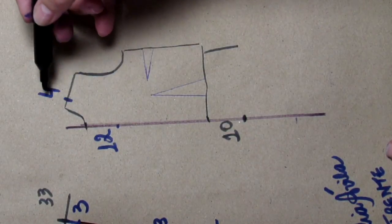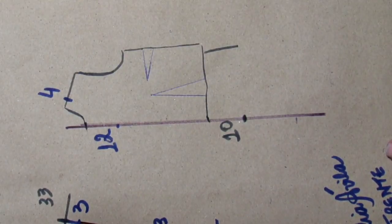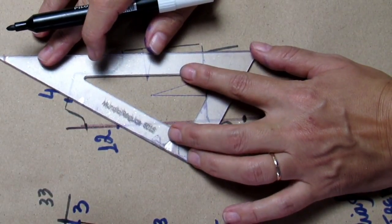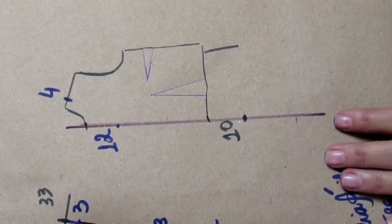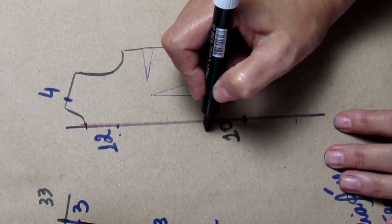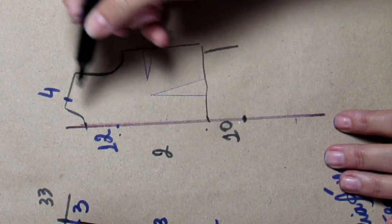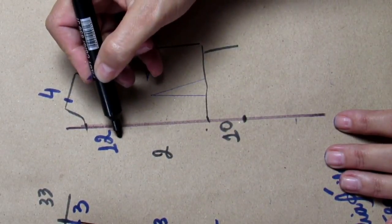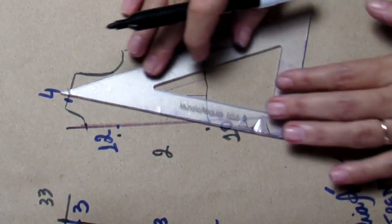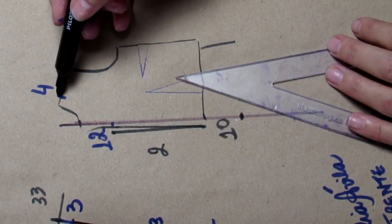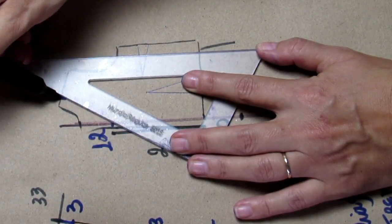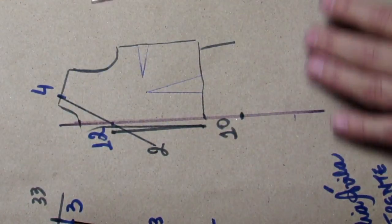For neckline depth I marked 12cm and at the shoulder I came in 4cm. If you want a deeper neckline, measure on your body what neckline depth you like. From the center front outward I came out 2cm for the button overlap. So mark from the center line outward, at the top and bottom, 2cm and connect with a straight line.